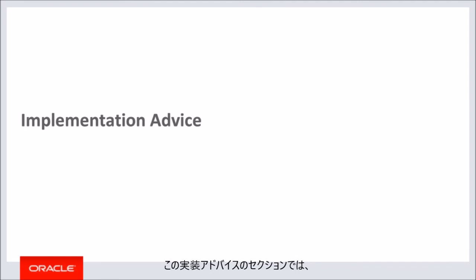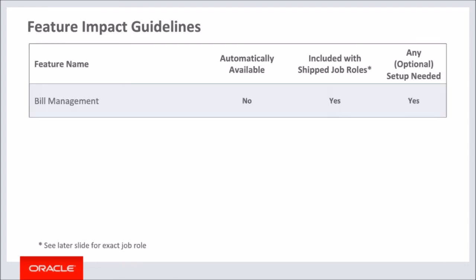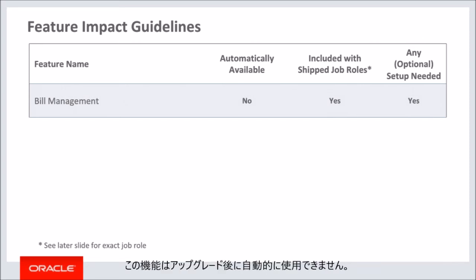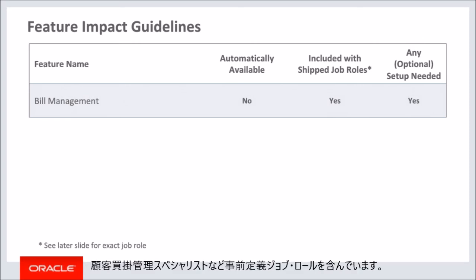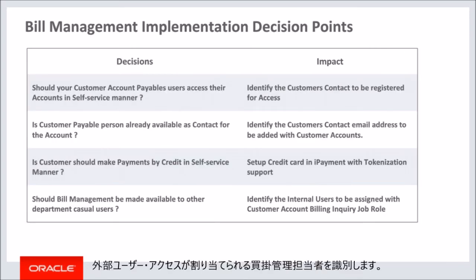In this implementation advice section, we will go through what you need to consider before enabling these features in your business and what you need to know to set them up. This table depicts key upgrade information for the new features covered in this training. The feature is not automatically available after upgrade. You need to follow the setup steps mentioned in the next few slides to enable the feature. This feature is included with the shipped job roles: Customer Account Billing Enquiry and Customer Accounts Payables Specialist. Identify accounts payables contacts to be assigned with external user access.